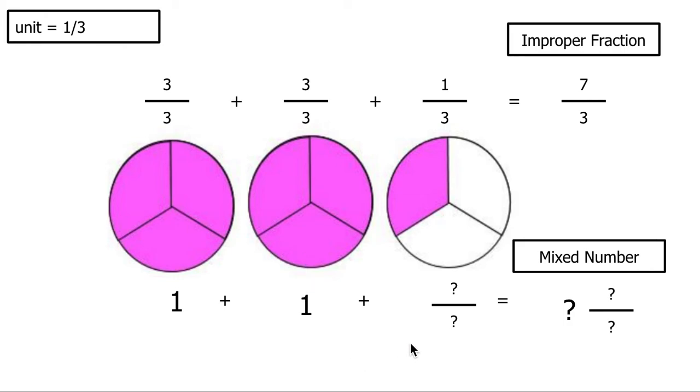And lastly, our last circle has 1 third shaded in. And you'll notice that for our improper fraction and our mixed number, the last piece is going to be the same.